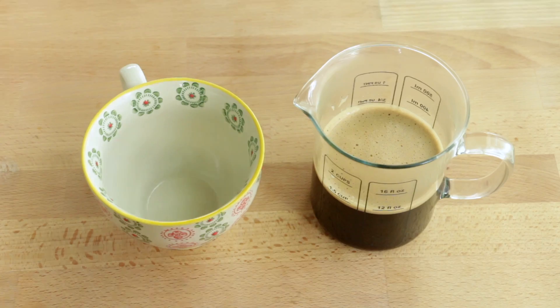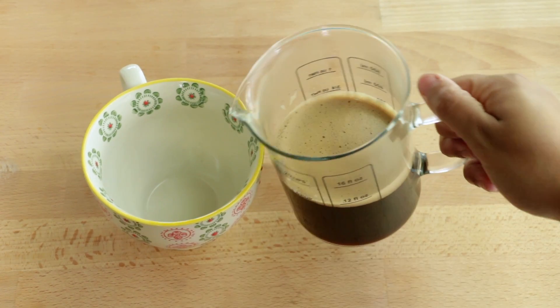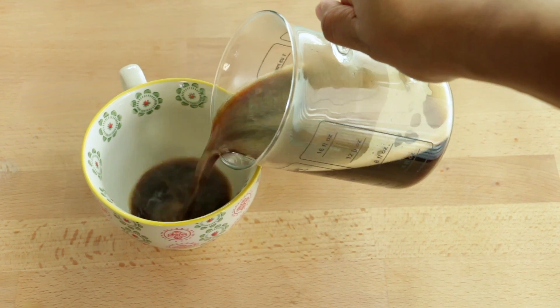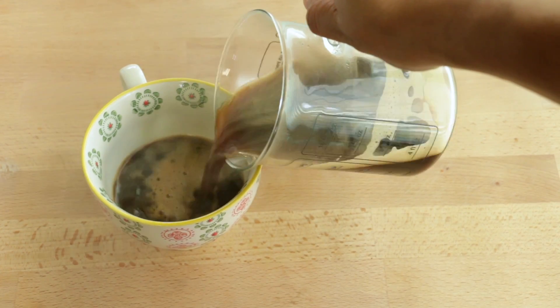Once you have your sugar all mixed in, you're ready to pour. Whatever cup you're using, make sure you kind of shake your measuring cup a bit so you can get as much froth as possible.